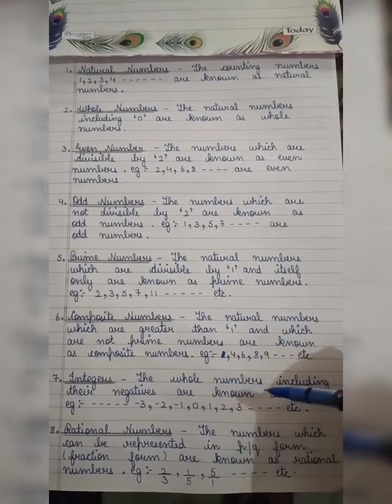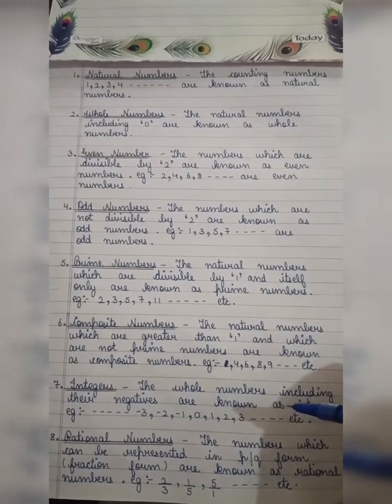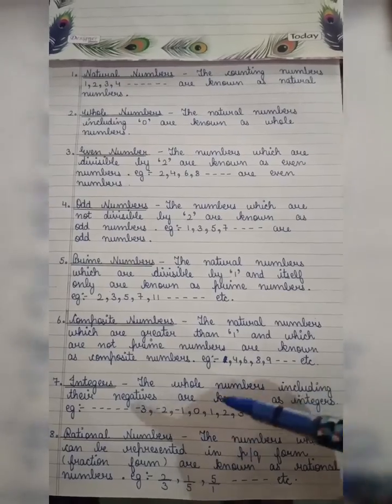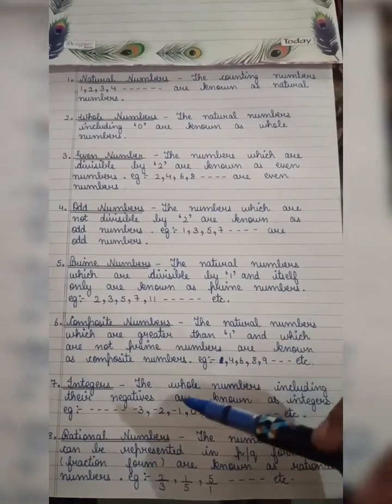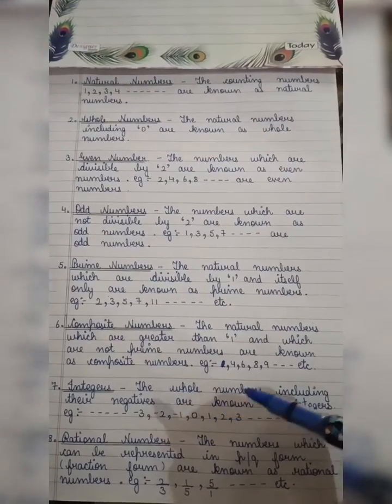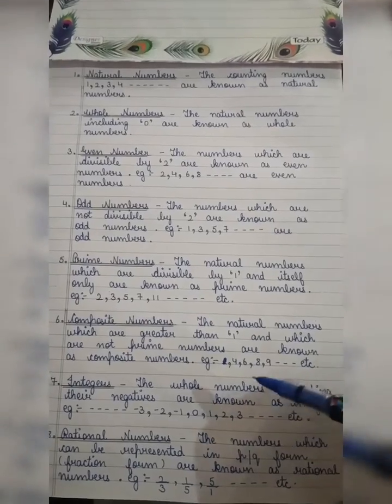Integers - the whole numbers including their negatives are known as integers. Or, the numbers which can be represented on the number line are known as integers. Example: the numbers from minus infinity to plus infinity including 0 are called integers.